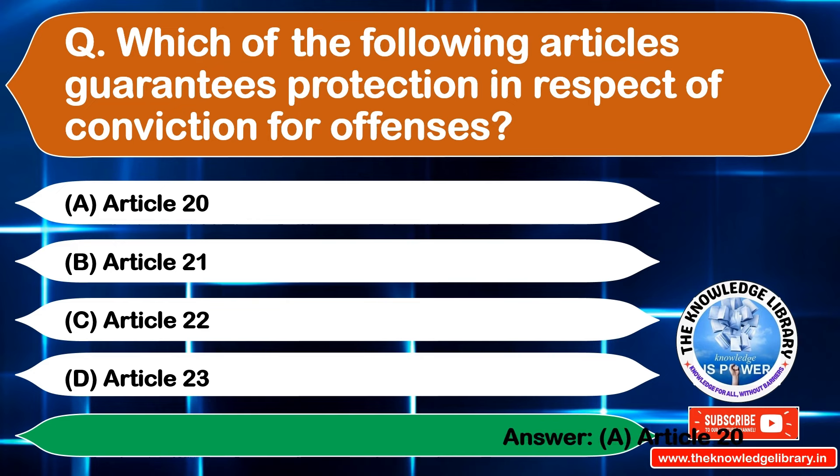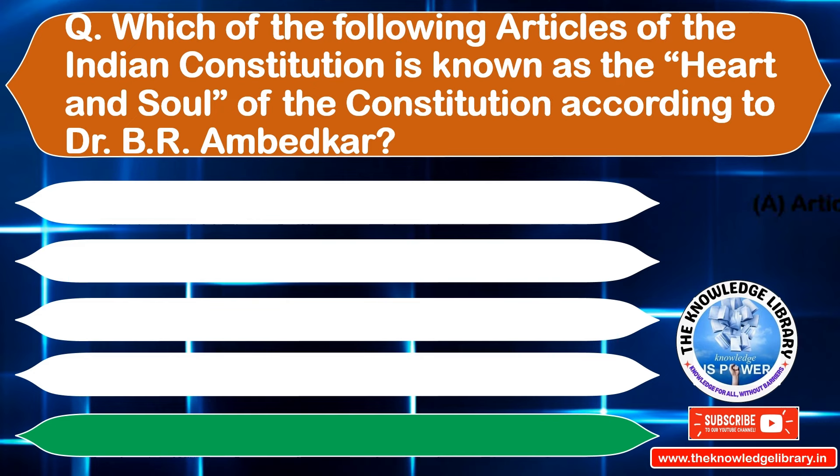The next question is: which article of the Indian Constitution is known as the heart and soul of the constitution, according to Dr. B.R. Ambedkar? Option A: Article 19, Option B: Article 21, Option C: Article 32, Option D: Article 14. The correct answer is Option C: Article 32.